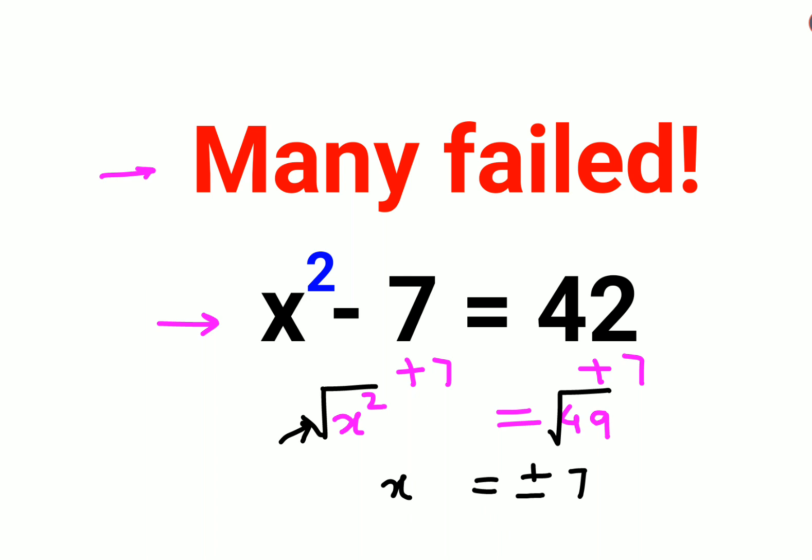Otherwise the answer will be only 7 if you just had to find the square root of 49, if it was not equal to any variable. So here let's put this value of minus 7 and plus 7 in the x value for the question.